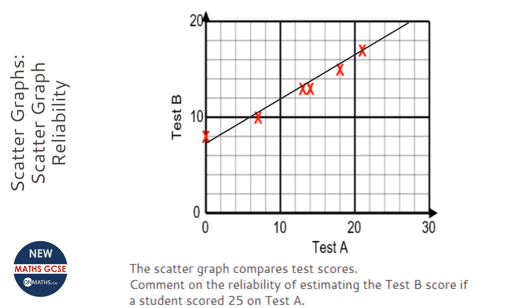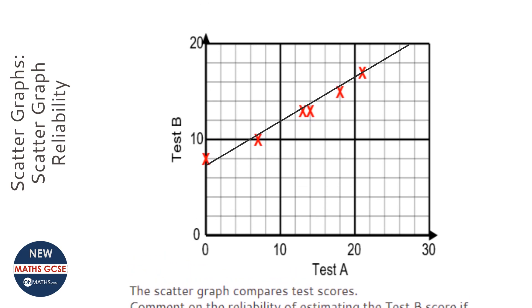It says a student scored 25 on test A. So if we just start trying to estimate it, 25 would be here on test A, and then we could read off what they got on test B.